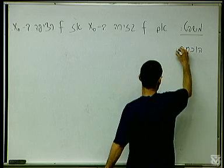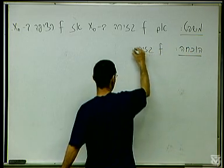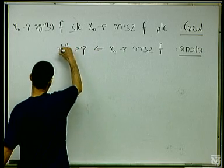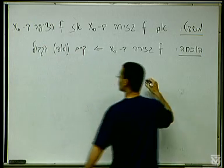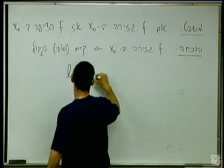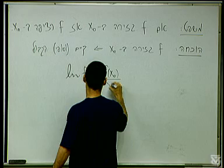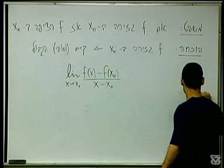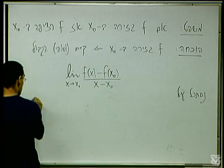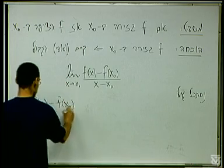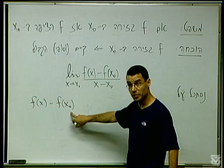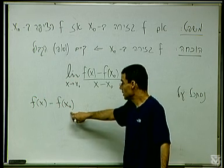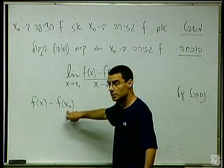הוכחה. f גזירה ב-x0, מה זה אומר? זה אומר שקיים וסופי הגבול: lim של f(x) פחות f(x0) חלקי x פחות x0 כש-x שואף ל-x0. זאת הגדרת הגבול. נסתכל על הביטוי f(x) פחות f(x0). אם אני אראה שהביטוי הזה שואף ל-0 כש-x שואף ל-x0, סיימתי - זה להגיד רציפות.